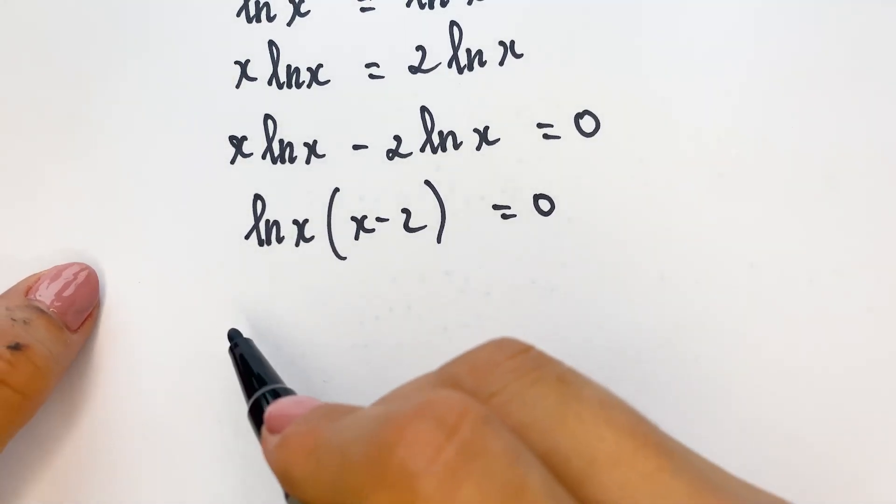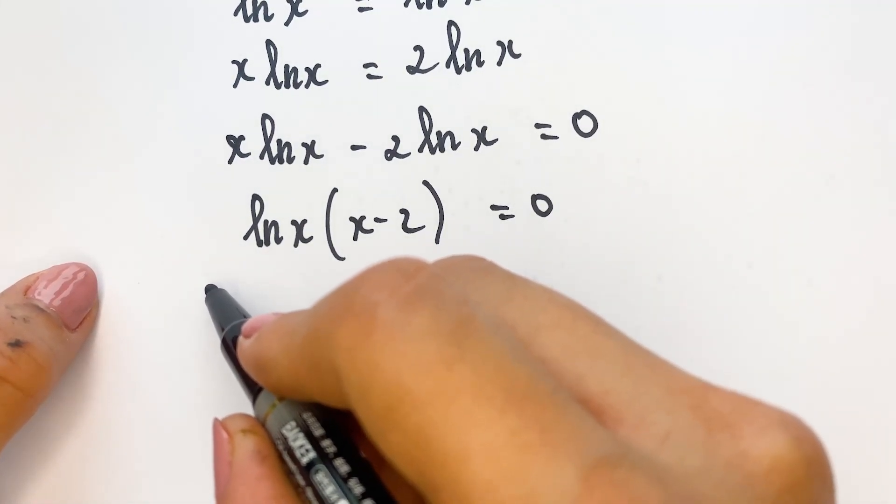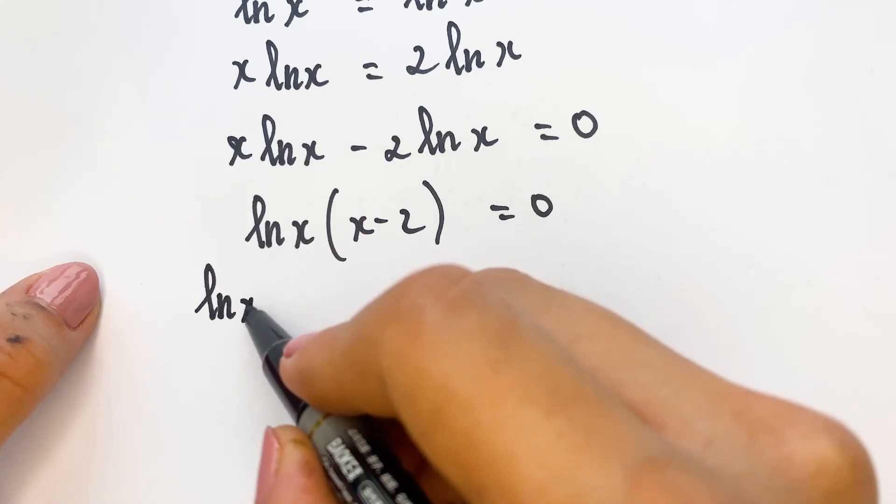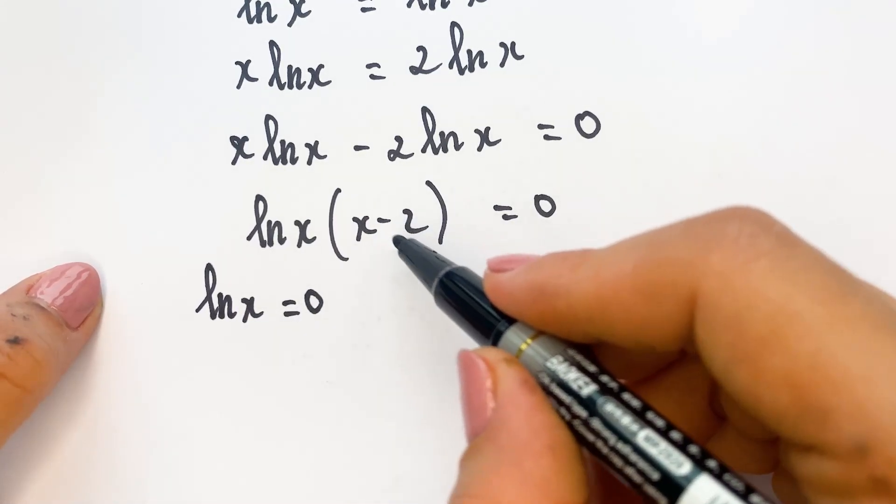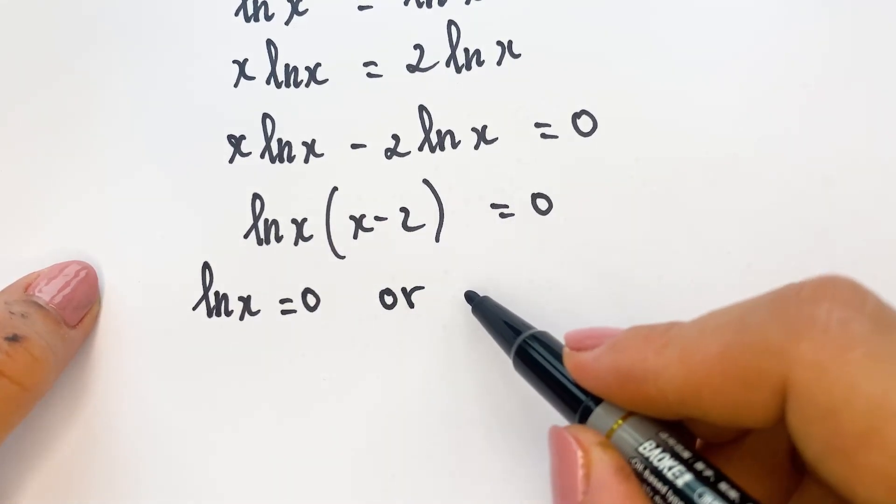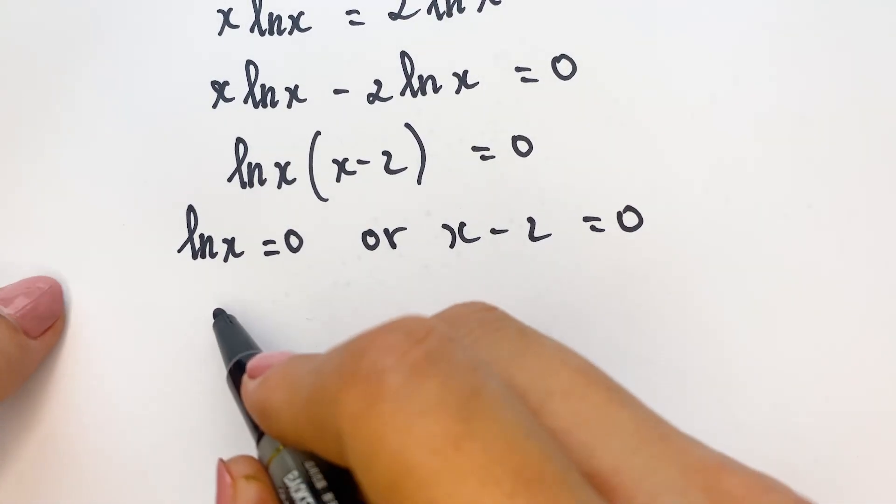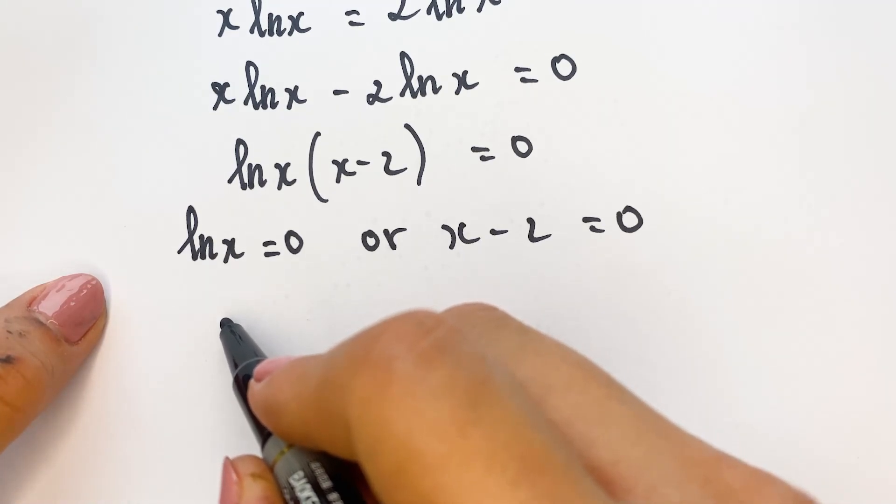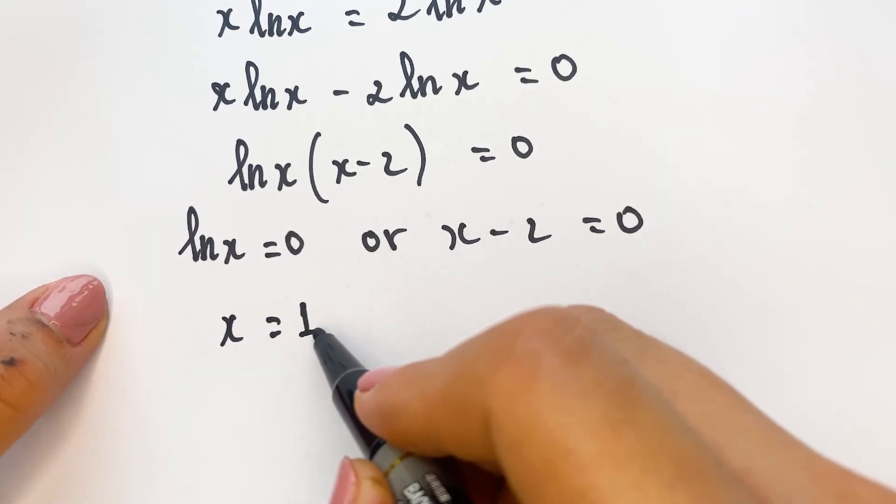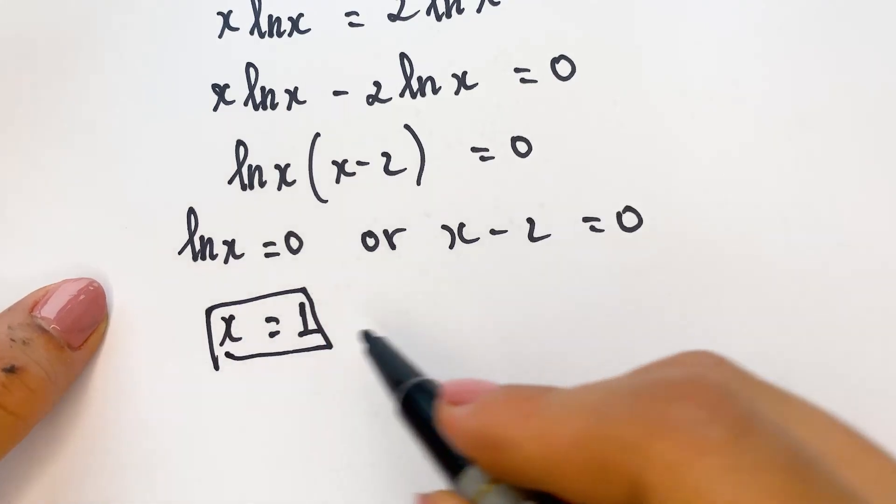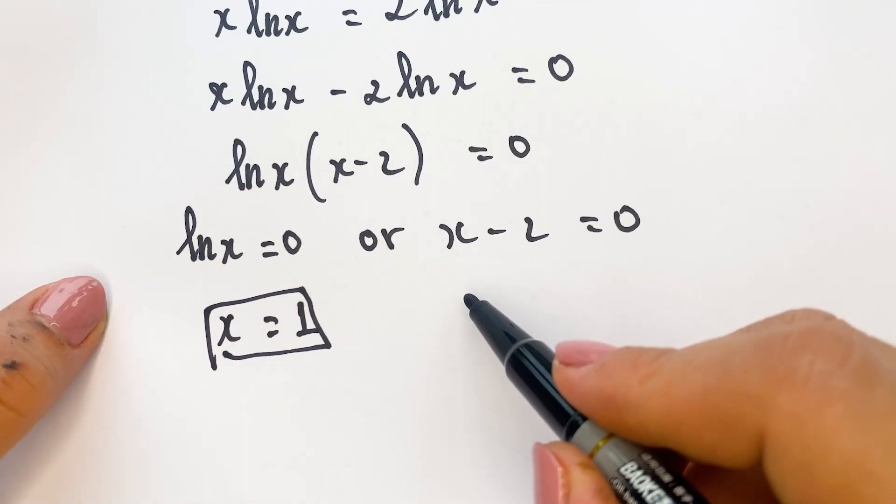And then for the next step, we can have two solutions. Firstly, natural logarithm of x equals zero, or x minus 2 equals zero.